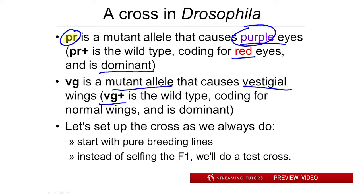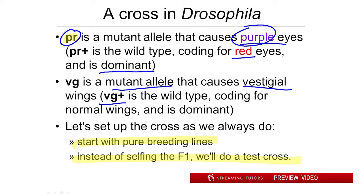So what we want to do is set up a cross, as we always do, meaning we're going to start with purebreeding lines. But instead of doing what Mendel did when he formulated the law of independent assortment — instead of selfing the F1 — we're going to do a test cross, and there's a very definite reason for this. When you do a test cross, it's going to allow you to see what's going on with the gametes in one of the parents. Let's see how that's true.